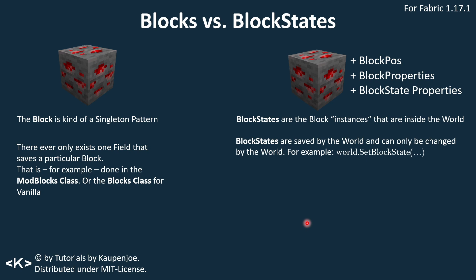Block state properties can change from each individual block in the world. If you have three buttons and press one of them, the block state property changes — not the block property. If the block property changed, all three buttons would change — basically all buttons in the entire world. You can think of an instance as meaning all three are buttons, but they're different buttons.